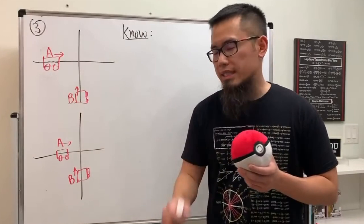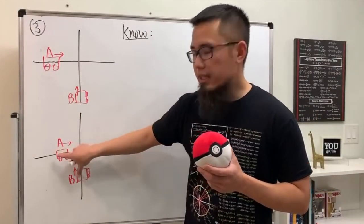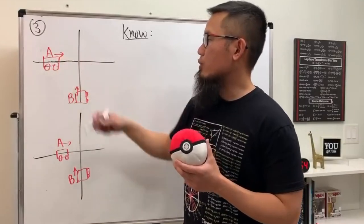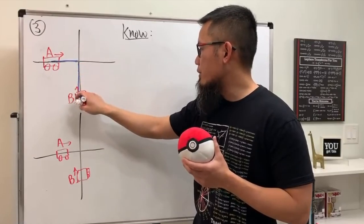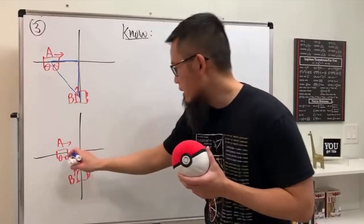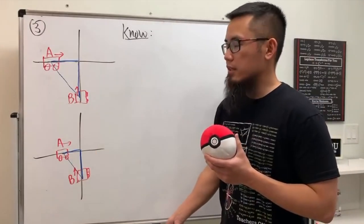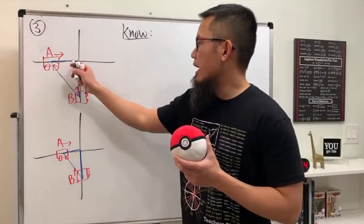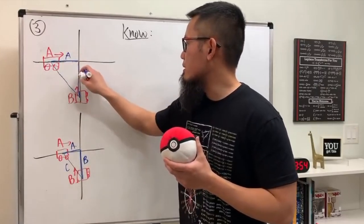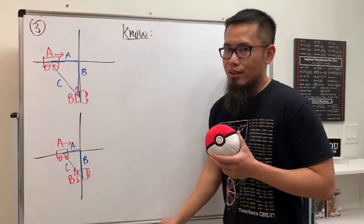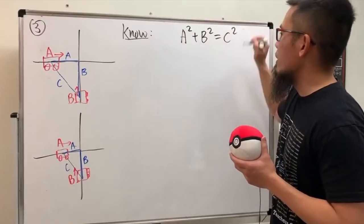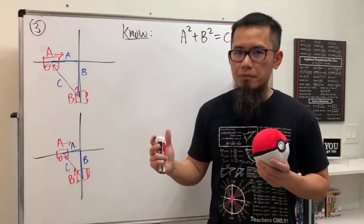The two cars meet at a 90-degree angle at the intersection. The question asks how fast the straight-line distance between them is changing. We call the distance from the intersection to car A as 'a', to car B as 'b', and the distance between the two cars as 'c'. We use a² + b² = c². All three — a, b, and c — are functions of time.